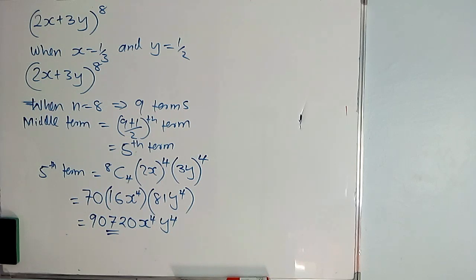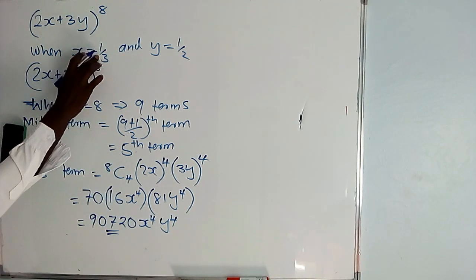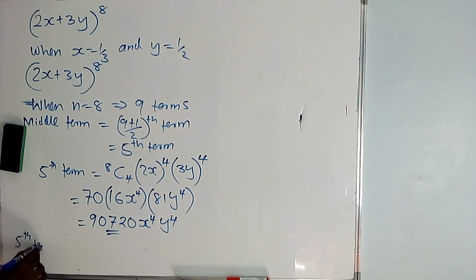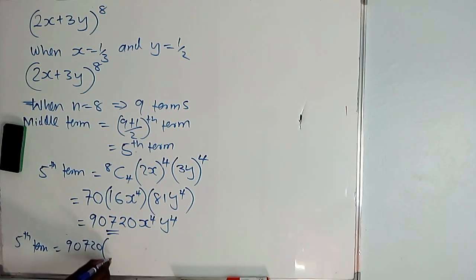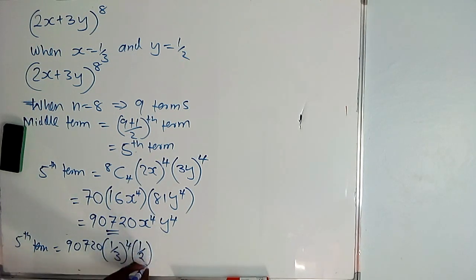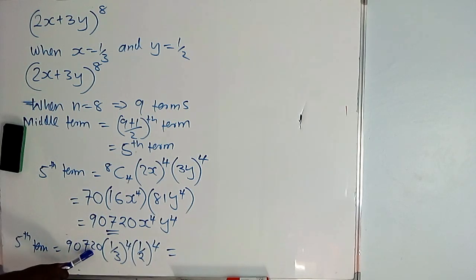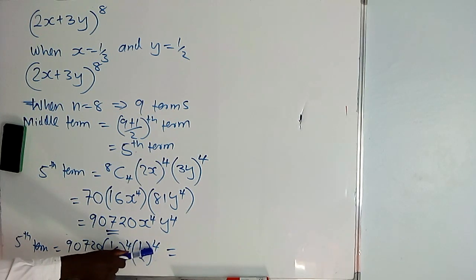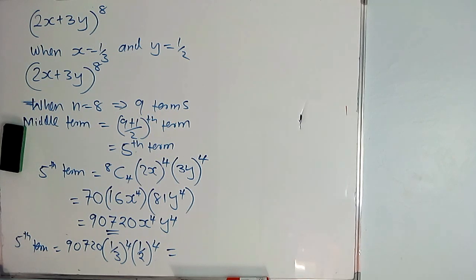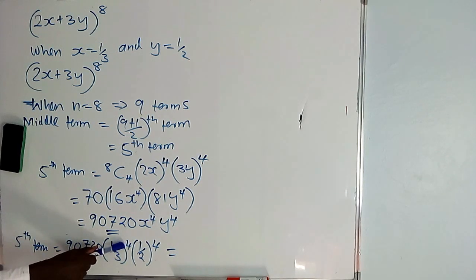Then after you found the fifth term, you can evaluate its value when x is a third and y is a half. Simply substitute — you bracket what you are substituting. So when x is a third and y is a half, we have the fifth term equals 9720, then x which is a third raised to power 4, then y which is a half raised to power 4. So you have 9720 times (a third) raised to power 4, times (a half) raised to power 4.